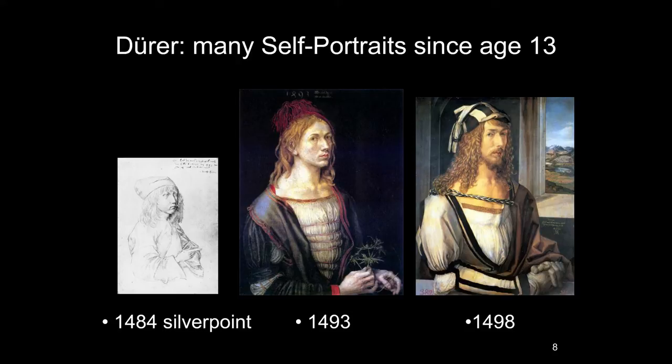The next picture, from 1493 when he was 22 years old, was painted just before he got married. He's shown as a beardless youth, holding an eryngium — a plant associated as an aphrodisiac — suggesting a foreshadowing of his marriage. It was an arranged marriage to the daughter of another craftsperson. Five years after that, the way he portrays himself is very different: he's shown as a gentleman, dressed in upper-middle-class or even aristocratic clothing, wearing gloves, with very carefully coiffed curly hair.